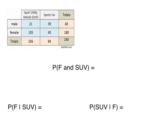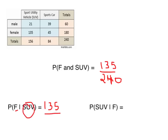Now let's practice calculating some conditional probability. This first one is an intersection: we're finding the probability of all females who own an SUV. The number of females who own an SUV is 135, over 240 — this is nothing new. Now things change with a conditional probability. The numerator is still 135, but the denominator is not out of everyone; it's out of SUV owners only, which is 156. Notice the same numerator but a different denominator.